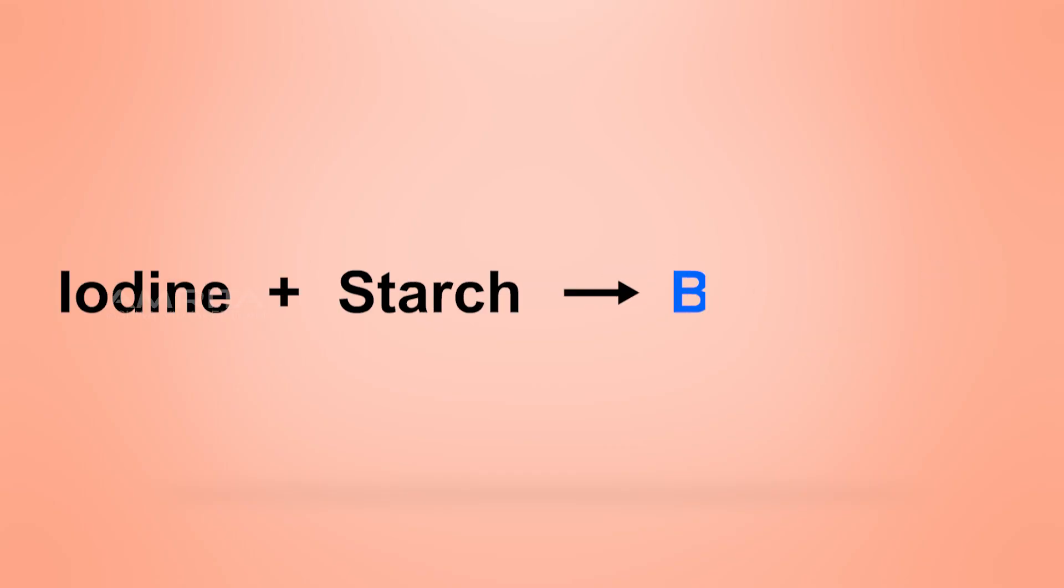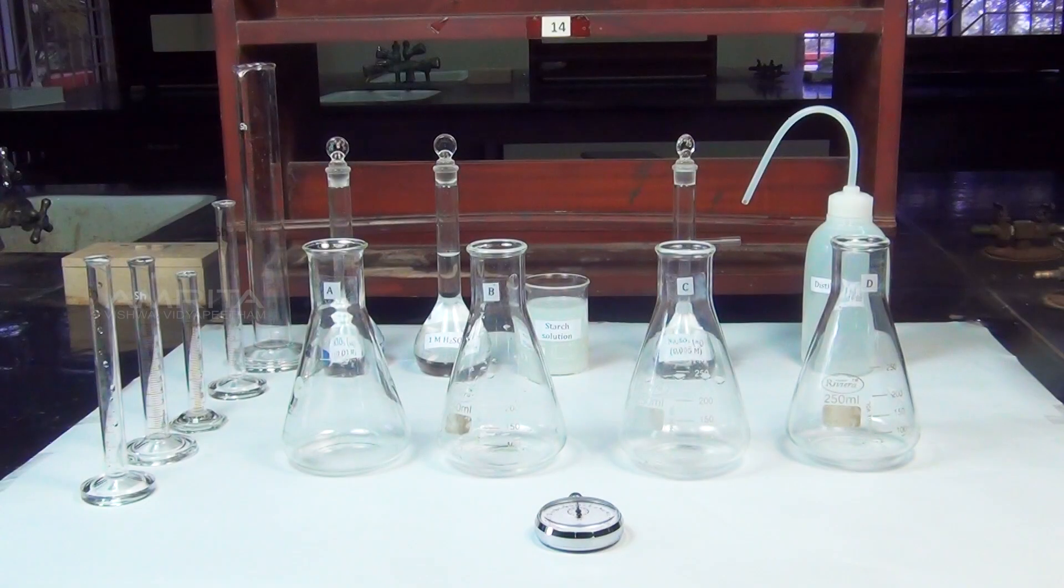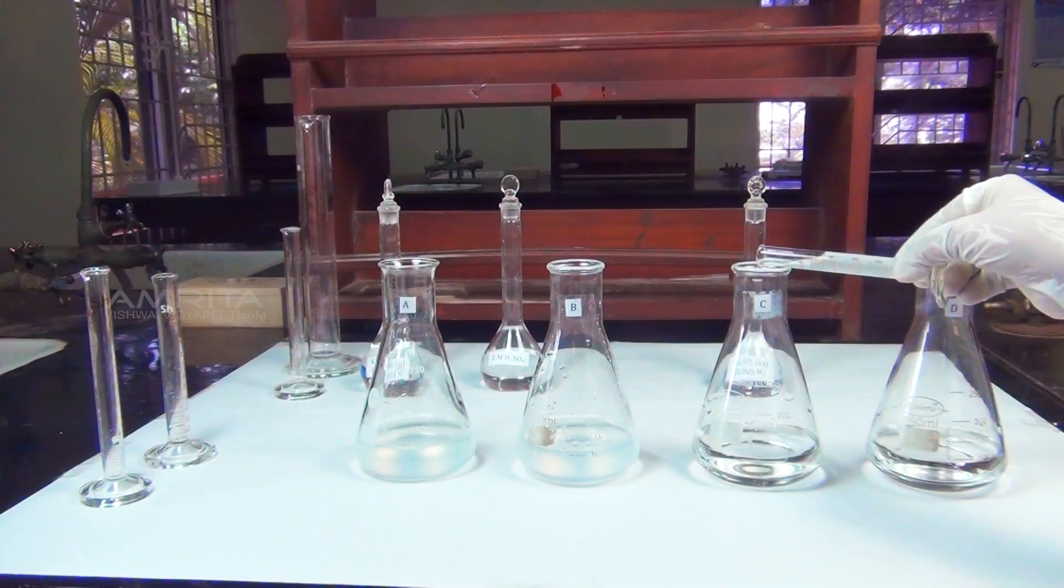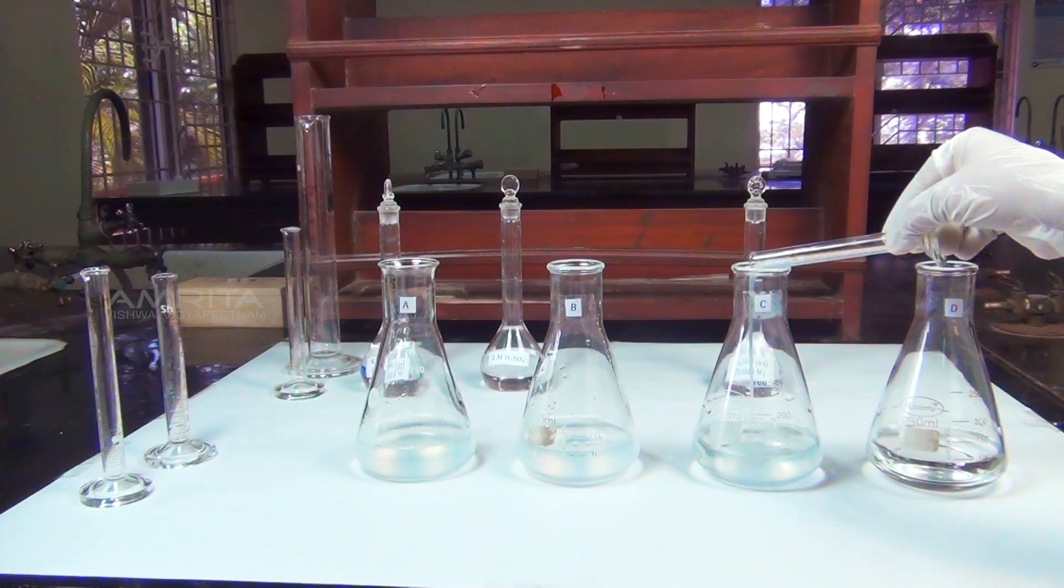When sulphite ions are completely consumed, the liberated iodine reacts with starch solution giving a blue colour. Our aim here is to study the reaction rate of the reaction between potassium iodate and sodium sulphite using starch solution as indicator.